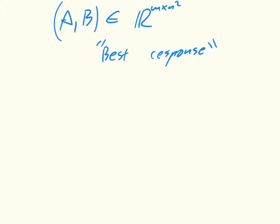So for example, we say that sigma star r is a best response to a column player strategy sigma c, if and only if sigma r star is equal to argmax over all sigma r's belonging to the role player strategy set.